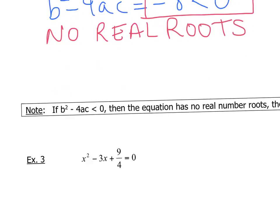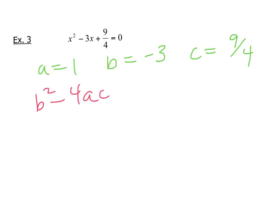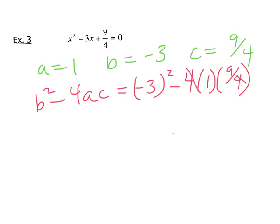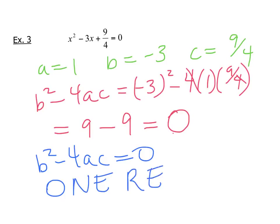Moving on to the next example: we've got x squared minus 3x plus 9 over 4. We can say that a equals 1, b equals negative 3, and c equals 9 over 4. For b squared minus 4ac, the discriminant, we have negative 3 squared minus 4 times 1 times 9 over 4. That cancels out nicely, so we've got 9 minus 9, which equals 0. Our discriminant equals 0, and that tells us there is one real root.